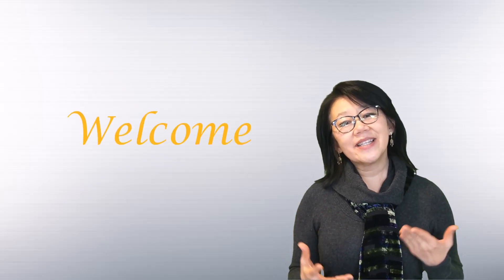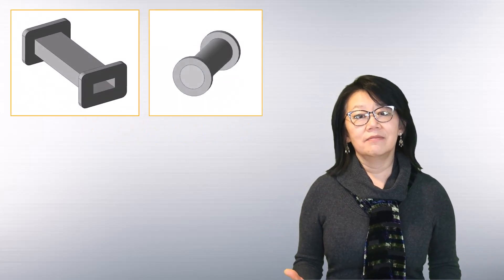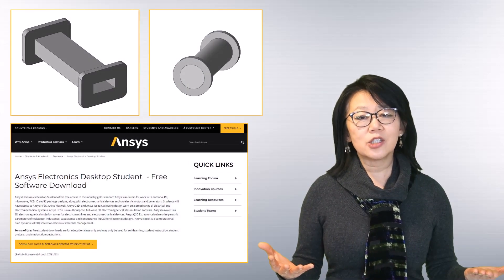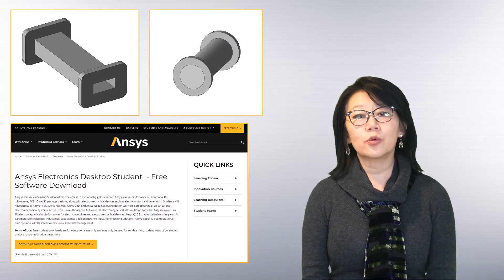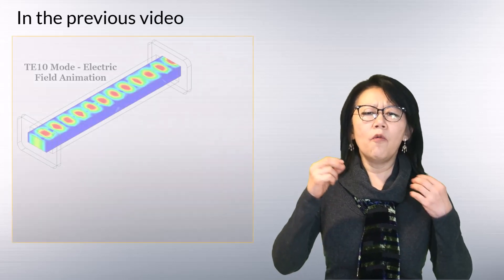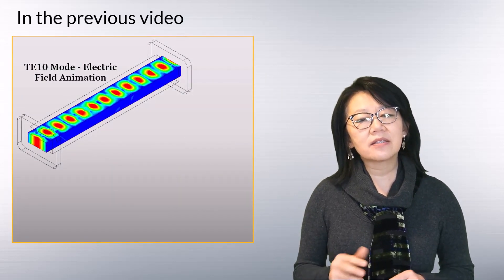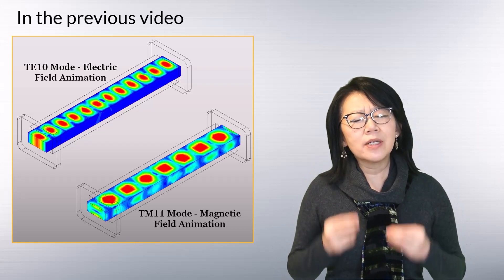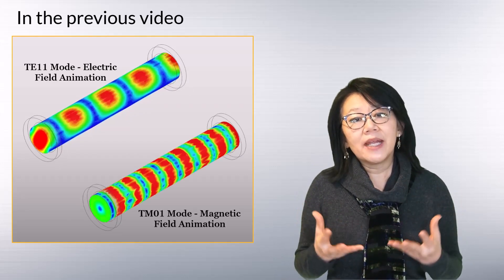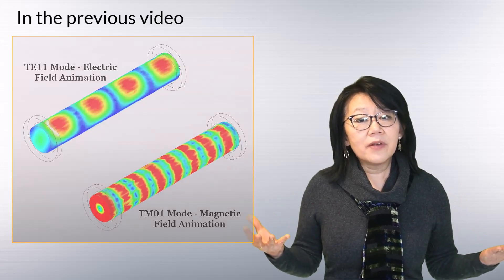Welcome back to this ANSYS module on designing waveguides using ANSYS Electronic Desktop student version, AEDT student for short. In the previous module we discussed the need and why to use electromagnetic solvers like AEDT HFSS to give you a better understanding of the propagating modes in a waveguide.